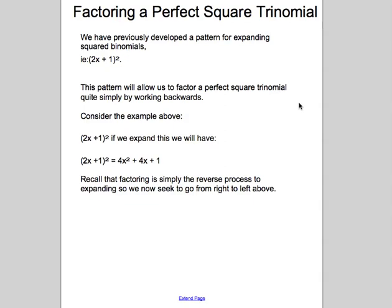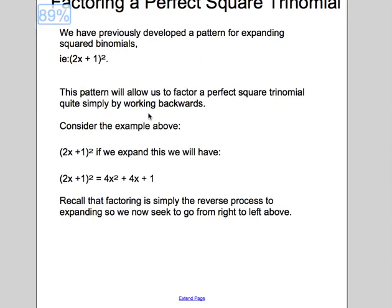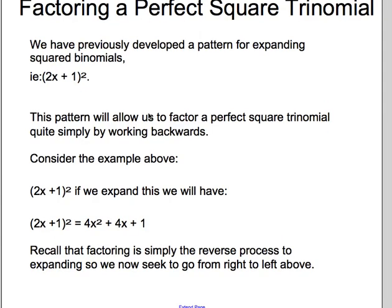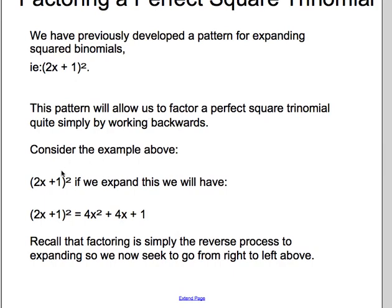The next type that we've seen is a perfect square trinomial. Recall we've seen a pattern for expanding squared binomials. And we did look over one of those in the warm-up. If we expand (2x + 1)², we would have (2x + 1)² turning into 4x² + 4x + 1.